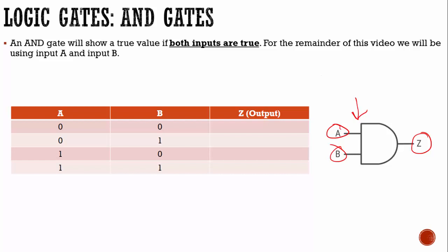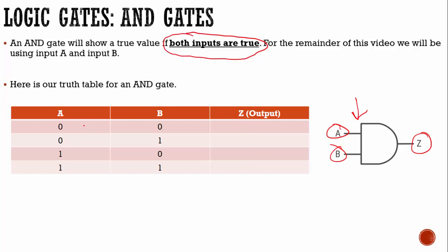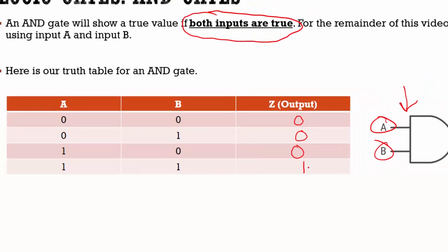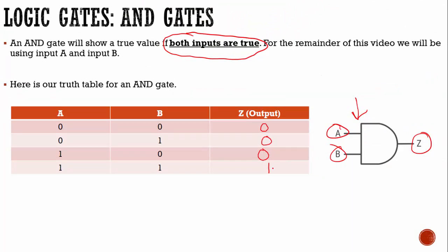For the remainder of this video we're going to be using inputs A and B. Here's our truth table for an AND gate, and we need to fill out the output. If A is not true and B is also off, that results in zero. If A is not true but B is true, that's not both of them — that results in zero. If A is true but B is not, that results in zero. Finally, when A is true and B is true — both are true — that results in a value of one, meaning it is on or true.